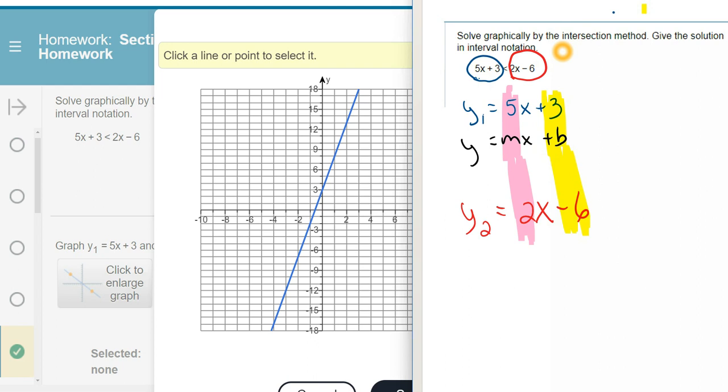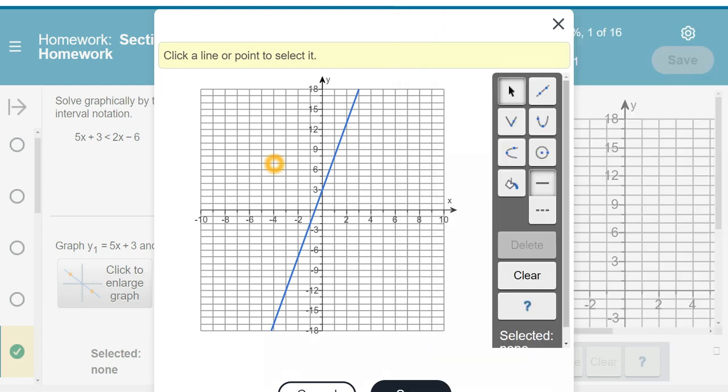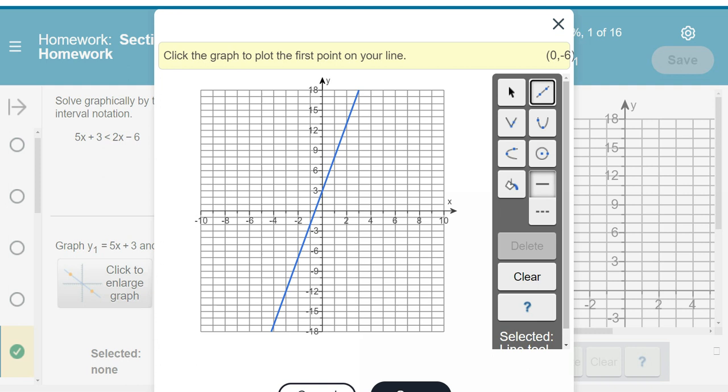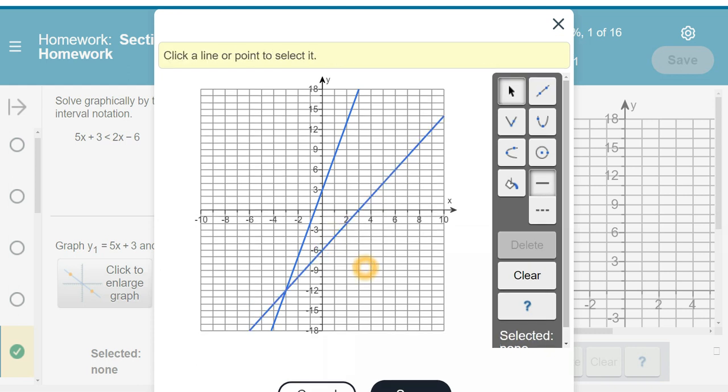So I'm going to go back over to the graph here, and you have to hit the line tool a second time, and then you're going to plot at negative 6, and then we're going to go up 2 over 1, and then lock it in place.